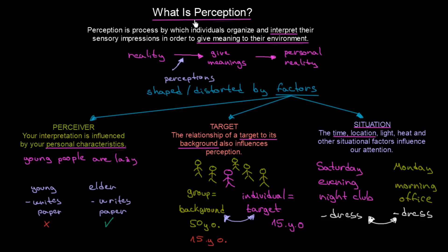So, we talked about what perception is — we are giving meanings to reality — and this process of giving meanings is influenced by our perceptions. There are some factors that can shape or distort our understanding of reality, and we can group them into three categories: perceiver, target, and situation.